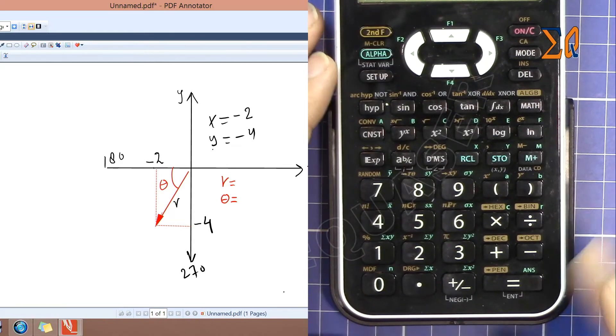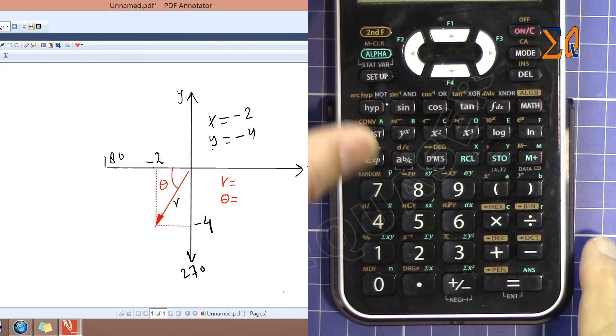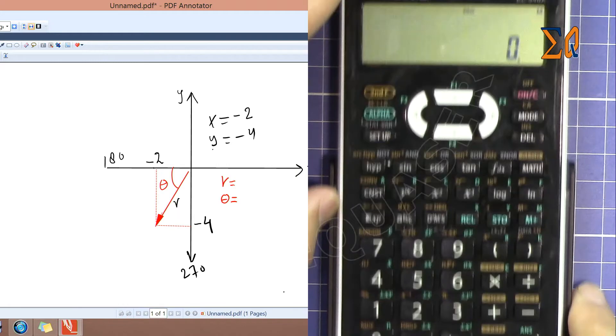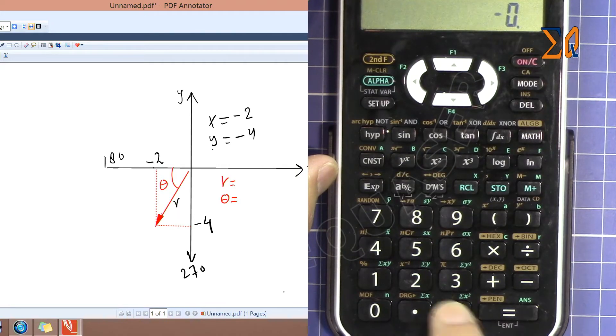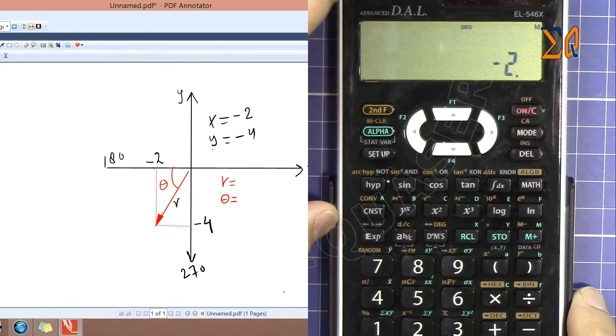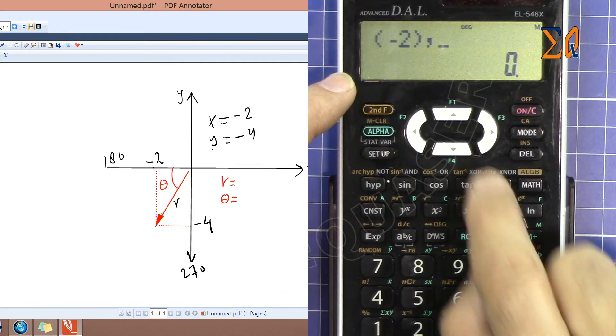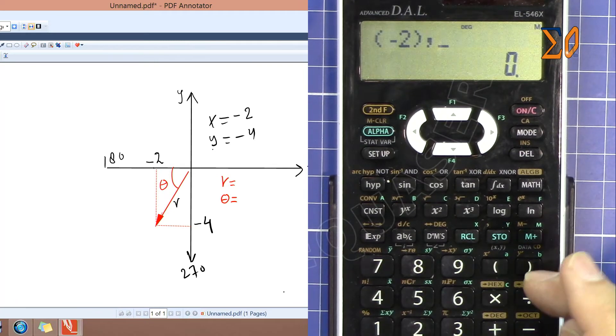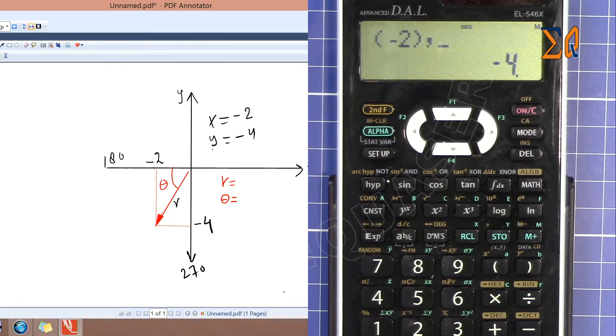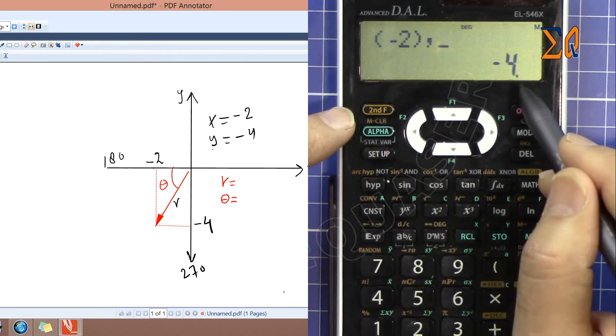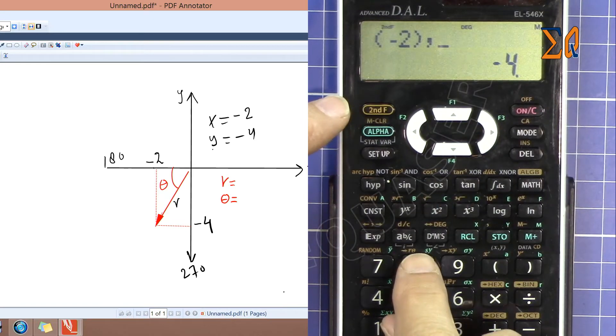To enter minus for the angle, remember always press this one. I'm entering it as minus 2, and then comma, and then minus 4. Now remember this parenthesis automatically because we put minus.